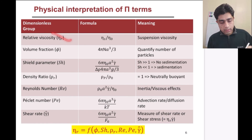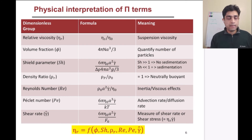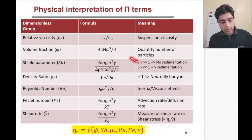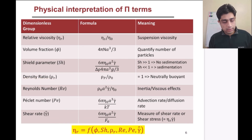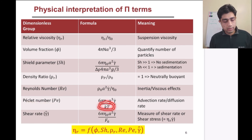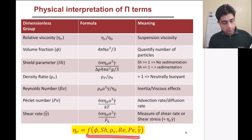Relative viscosity gives us the suspension viscosity and it is a function of all the other pi terms. Volume fraction quantifies the number of particles; the Shields parameter tells us whether there will be sedimentation — if it is very high, the buoyancy force is small compared to the viscous force and particles remain suspended. Reynolds number tells us whether inertial forces are important, and Péclet number tells us whether Brownian forces are important. Viscosity can be written as a function of all these parameters.